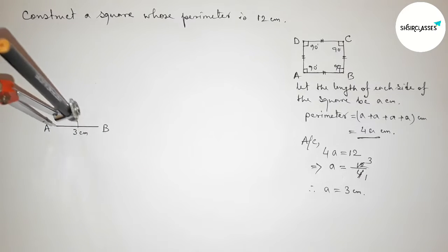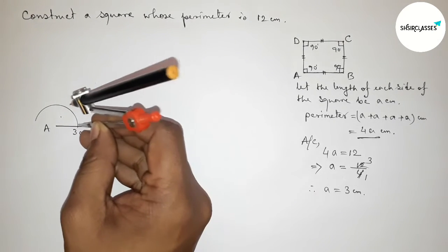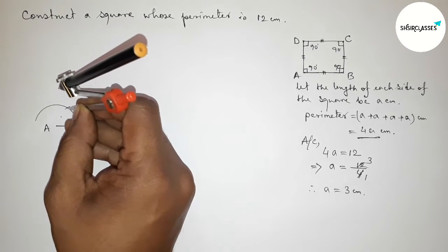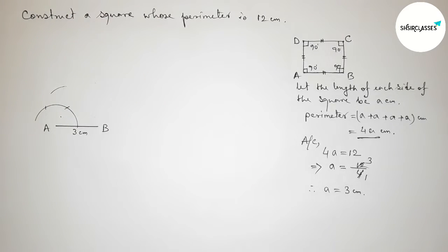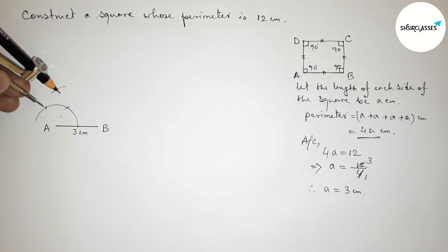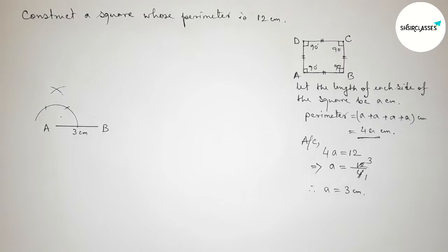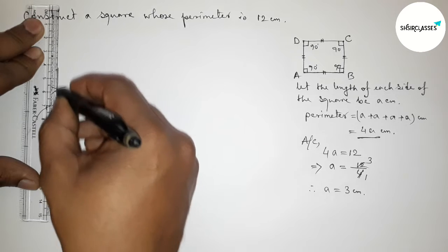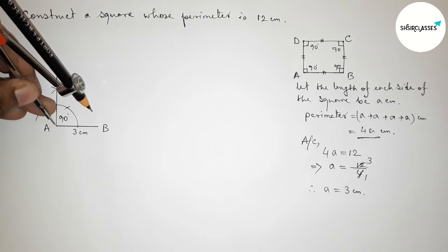Putting the compass on point A and taking any length, drawing an arc. Then putting the compass on that arc point, taking the same length, and cutting another arc. Repeating with the same length to get a third arc point, then joining the line to get a 90 degree angle at A.